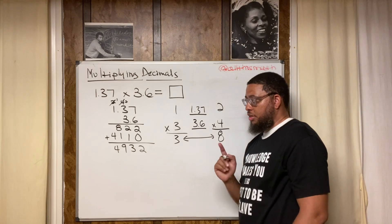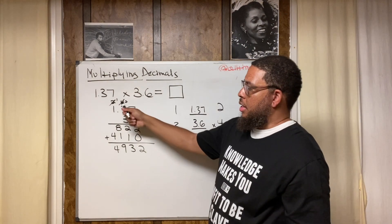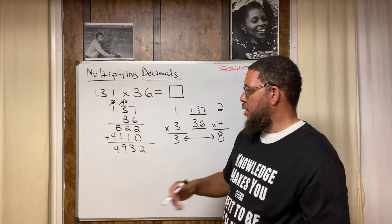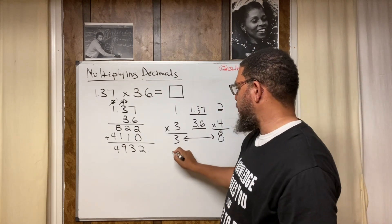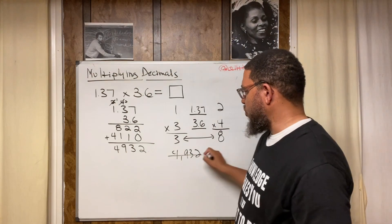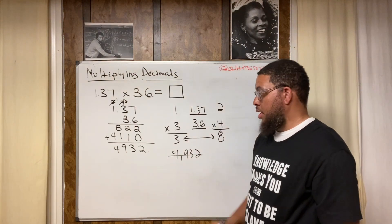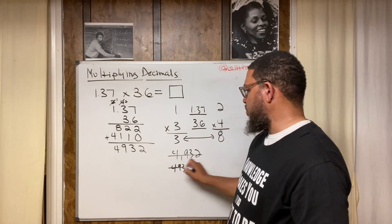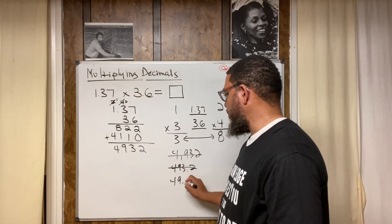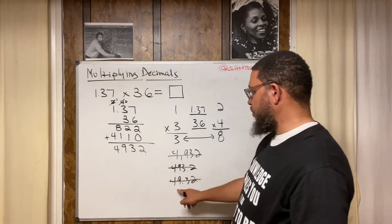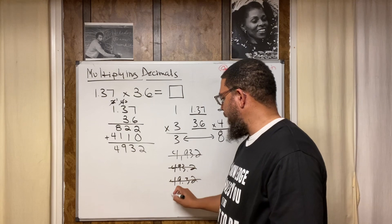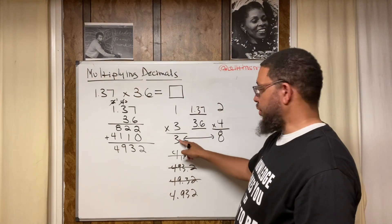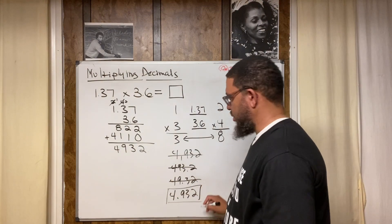So if I know the answer must be between 3 and 8 and I forgot the step for placing the decimal point, I can test options: putting the decimal at the end gives 4932 — wrong, not between 3 and 8. 493.2 — wrong. 49.32 — also wrong. But 4.932 — that's between 3 and 8! And .4932 is also wrong because it's less than 3. So 4.932 is the answer. That's how you figure it out if you forgot the step.